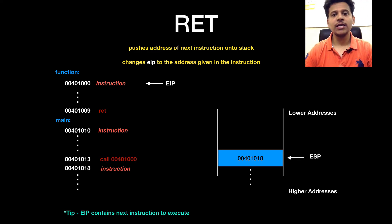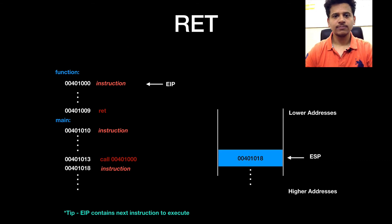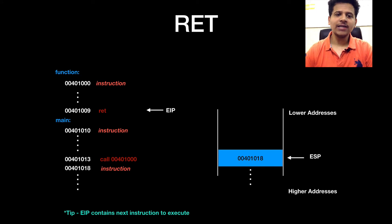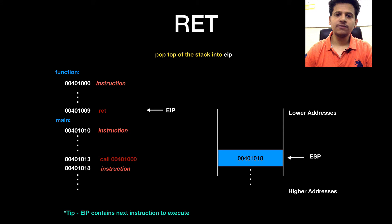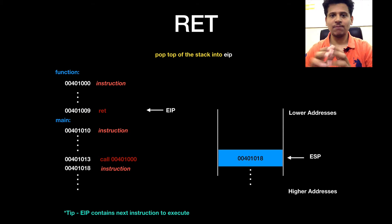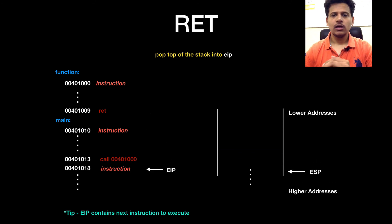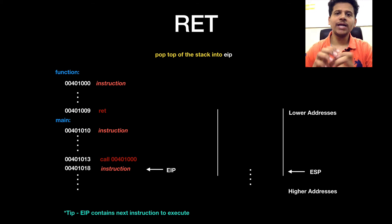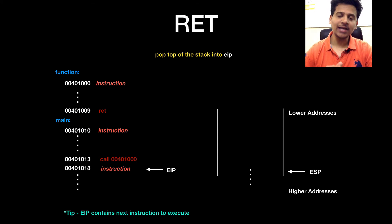Let's execute some instructions in the function. Now we are at the return instruction. For the return instruction, first the top of the stack will be popped into EIP. As we saw, 00401018 is popped into EIP and now EIP is pointing at that address.